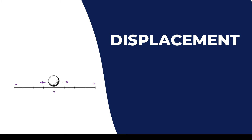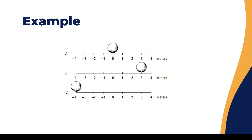We have a golf ball that can move in linear motion, meaning it moves along one line — either to the right or to the left. Imagine it's on a slider or rail that doesn't allow the ball to move forward or back, but only right and left.